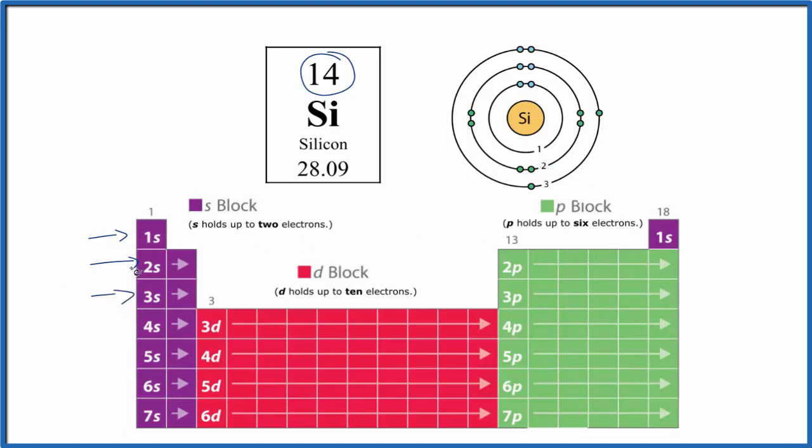So we go to the third energy level here, the third period. We have one, two, three, four. And this is where Si is, silicon, on the periodic table. So we put those four electrons in the highest energy level here, the third energy level.